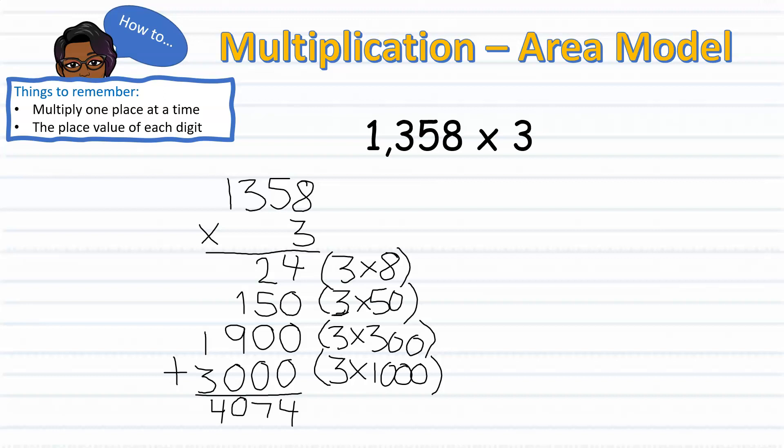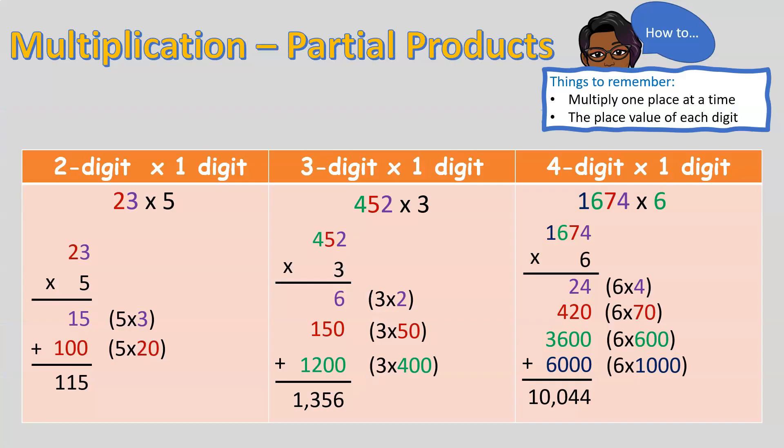Therefore, we know that 1,358 times 3 equals 4074. All right, parents. Now that's a wrap. I hope that wasn't too bad for you. As mentioned before, the partial product strategy is very similar to the traditional strategy. So hopefully this helps you to help your child with multiplication.